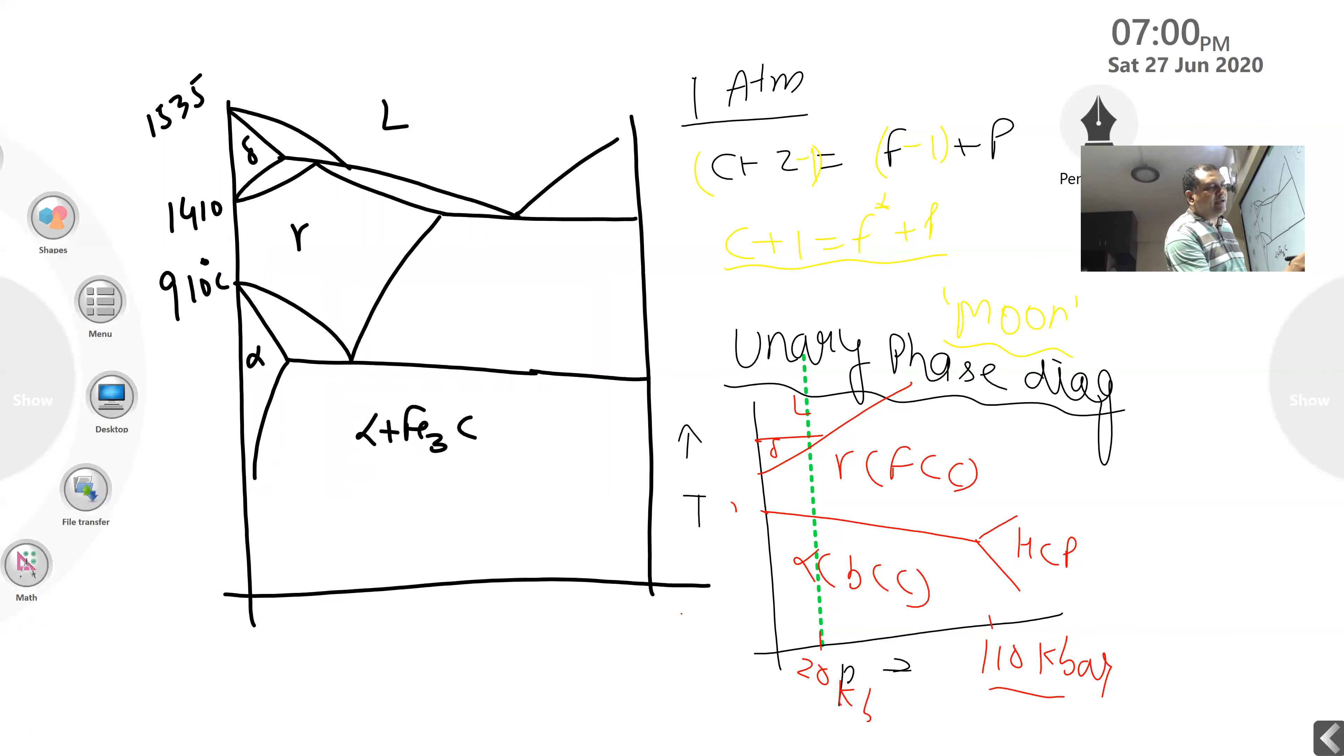This is 910 for you, this is 1410 and this is 1535. So this pattern. So this diagram is at one bar. So what is happening here if we can see, at room temperature the solubility of carbon in iron is decreasing as the pressure is increasing. I think this is the reference.